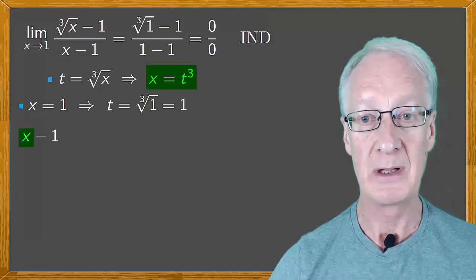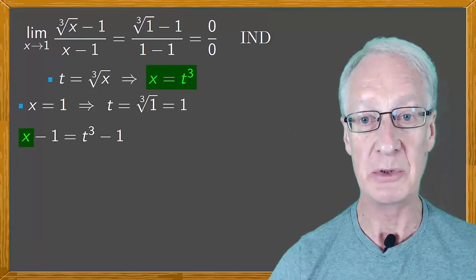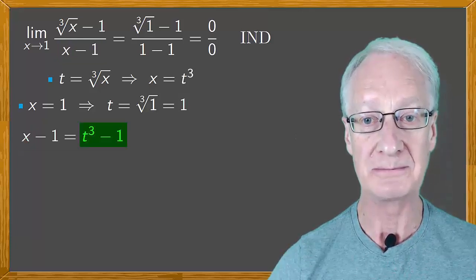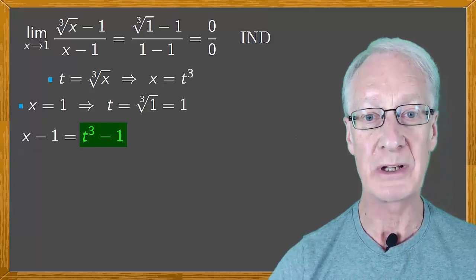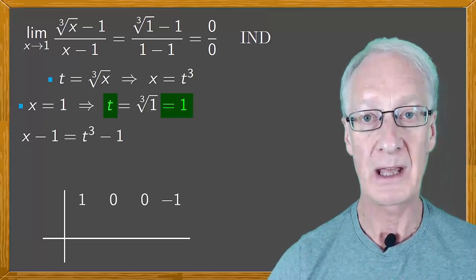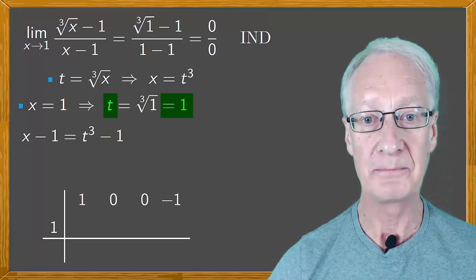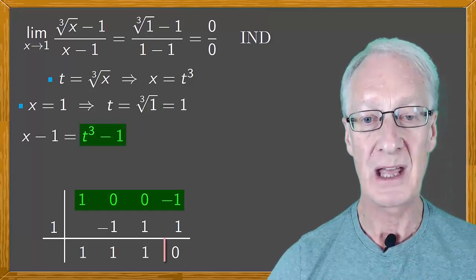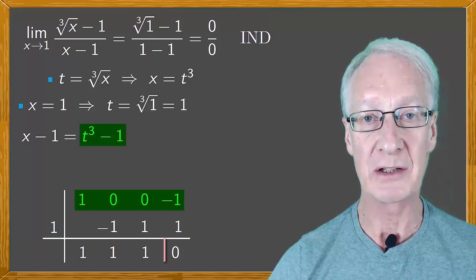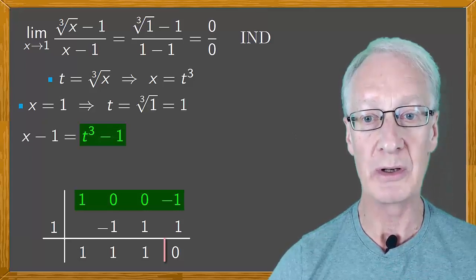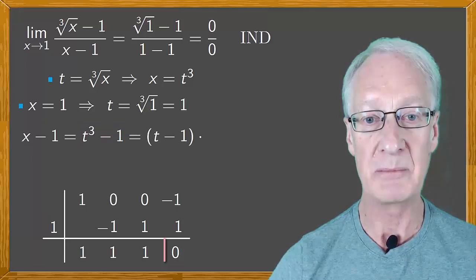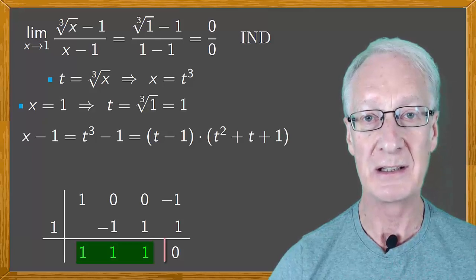x minus 1 becomes t cubed minus 1. Now let's factor this polynomial. And for this, we can use Ruffini's rule. As t equals 1, here's the procedure. And note that we can factor t cubed minus 1 as t minus 1 times t squared plus t plus 1.